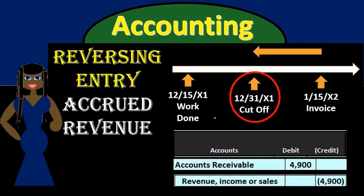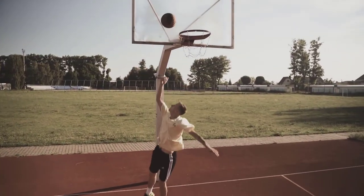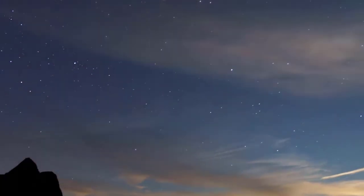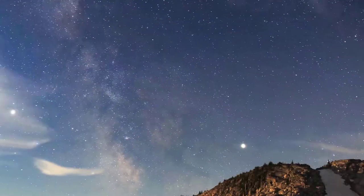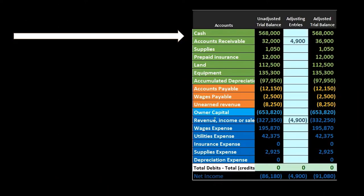Then we want to consider if we want to use reversing journal entries. Those will be made the day after the financial statements have been generated, in order to make adjustments to some of the adjusting journal entries that may need adjustment to make our normal accounting process work. This time we're going to talk about those reversing entries related to accrued revenue and why we might want to use them.